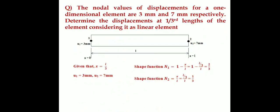We verify that the sum of shape functions equals 1: N1 + N2 = 2/3 + 1/3 = 1. The displacement function is u = N1·u1 + N2·u2. Substituting the nodal displacement values u1 and u2: